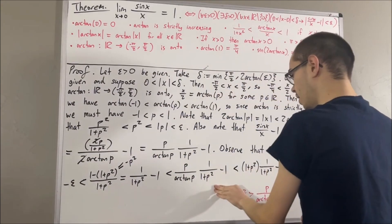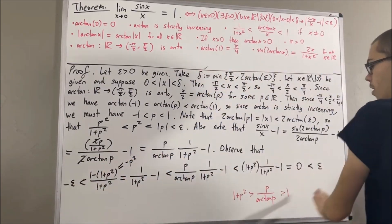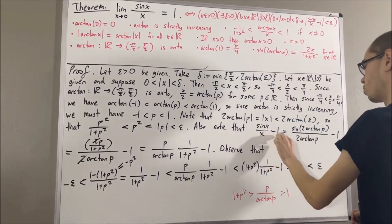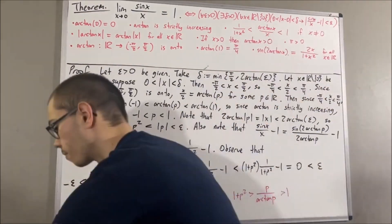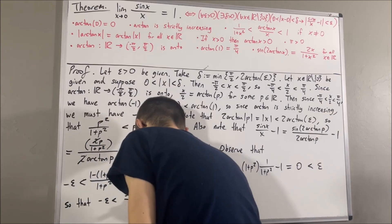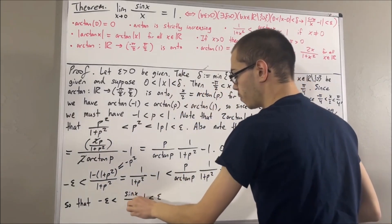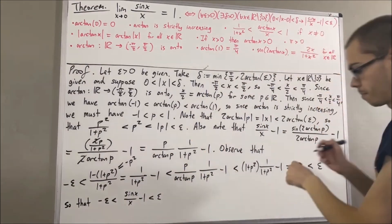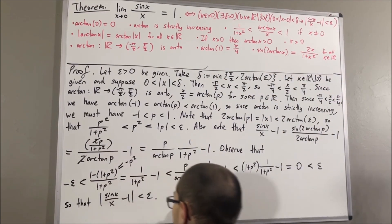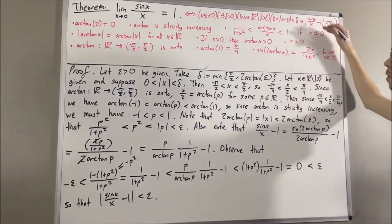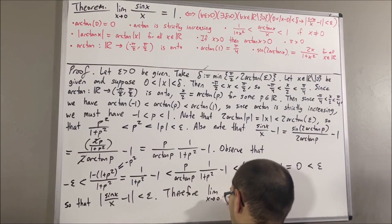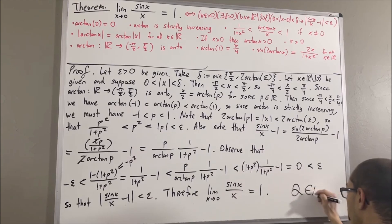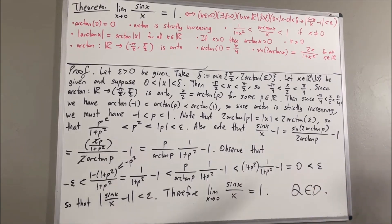This shows sine(x)/x − 1 lies between −epsilon and +epsilon, which is the same as |sine(x)/x − 1| < epsilon. So we have proven the required statement, which proves the limit is true. This completes the proof.